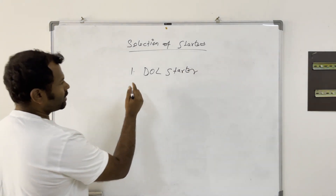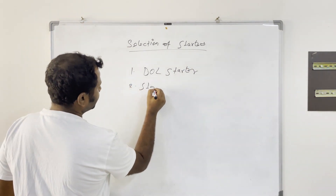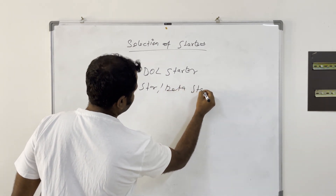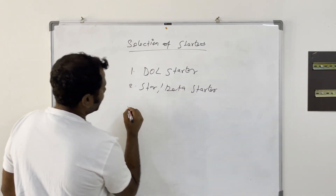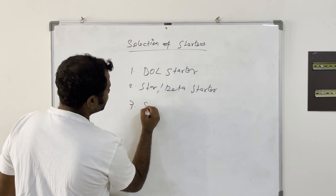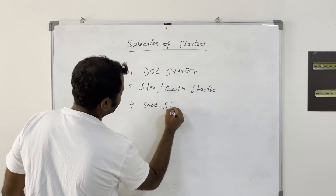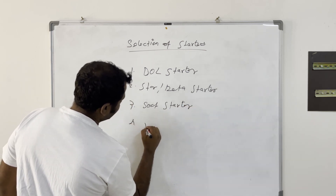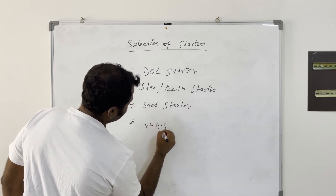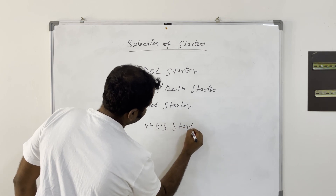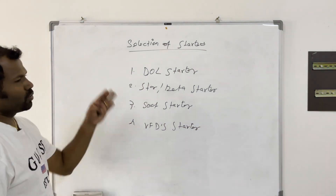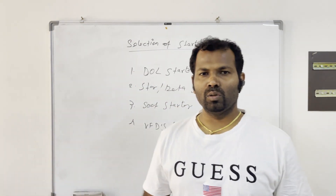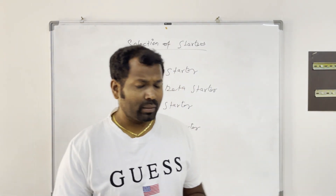The first is Direct Online (DOL) starter. The second is Star-Delta starter. Third is Soft Starter, and fourth is VFD starter. These are the four major types of starters commonly used in electrical fields.